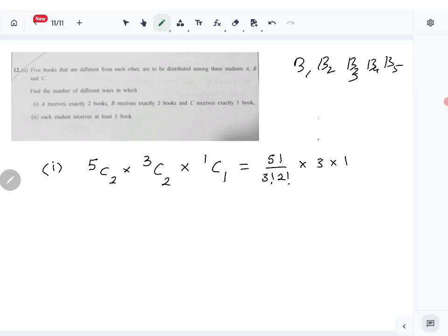5C2 times 3C2 times 1C1 equals 5 factorial over 3 factorial 2 factorial, times 3, times 1, which equals 30. So there are 30 ways for A to receive two books, B to receive exactly two books, and C to receive one book.